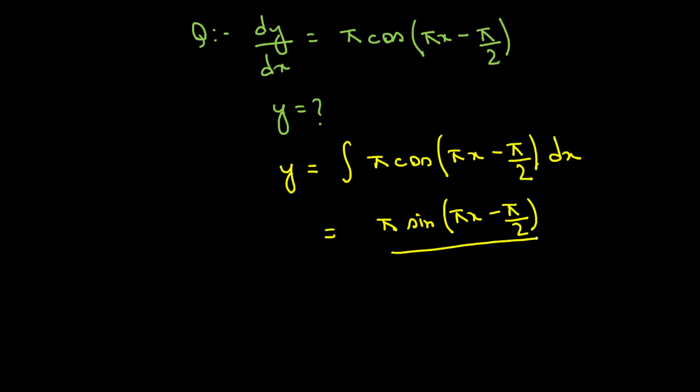divided by the derivative of pi x minus pi by 2. If we differentiate pi x minus pi by 2, we get just pi remaining plus c.